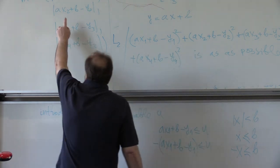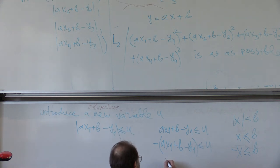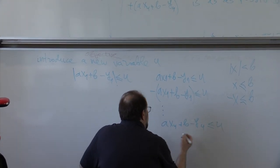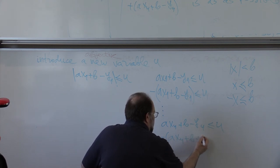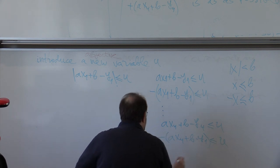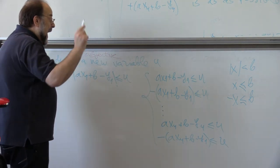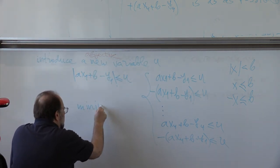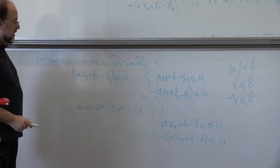So, we replace all of these by conditions like this. So, we will have all of them. At the end, we will have a x4 plus b minus y4 should be smaller than u. And minus a x4 plus b minus y1 is smaller or equal than u. And these will be your constraints.